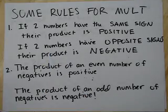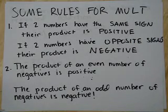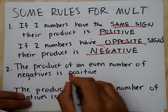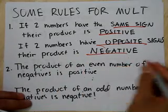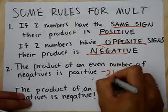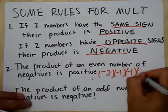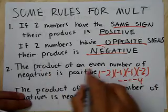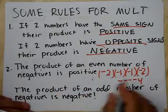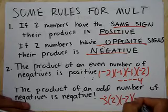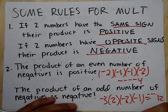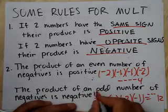Here are the rules people memorize. If two numbers have the same sign and you're finding the product, that product is positive. Two numbers with opposite signs give a negative product. The product of an even number of negatives is positive. For example: negative 2 times negative 1 times negative 1 times negative 2 — you get 2 times 1 times 1 times 2 equals 4, and those four negatives come with you. An even number of negatives makes it positive. But with an odd number of negatives — like negative 3 times 2 times negative 2 times negative 1 — you get 12, but with three negatives, the result is negative.